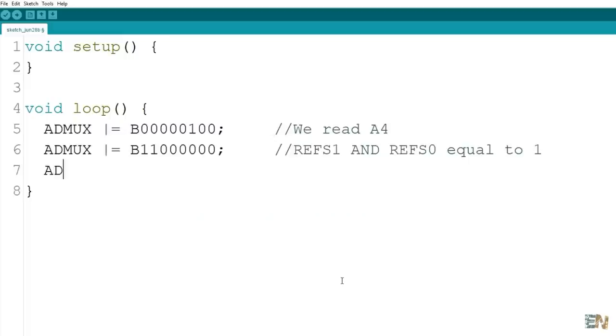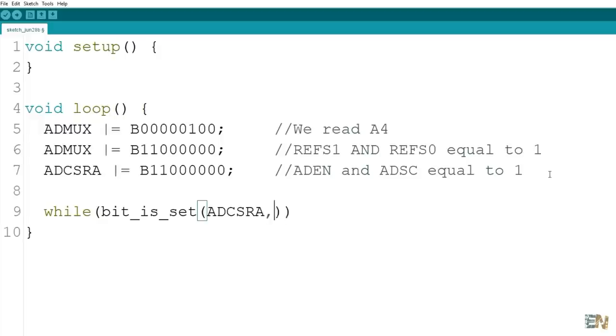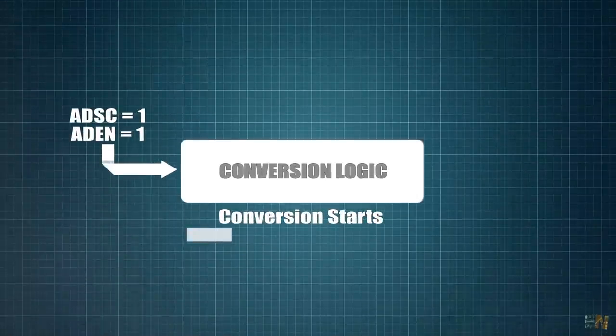So now in the code, we make ADCSRA or equal to 11000000 and that will start the conversion. But now how do we know when the conversion is done? Well, we can make a while and inside this we can place if bit is set and select the ADSC bit of the ADCSRA register. Because this bit will automatically go to 0 when the conversion is over.